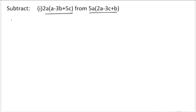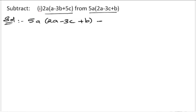Let us start the solution. We write 5a(2a - 3c + b) minus 2a(a - 3b + 5c). Now we need to open the brackets.